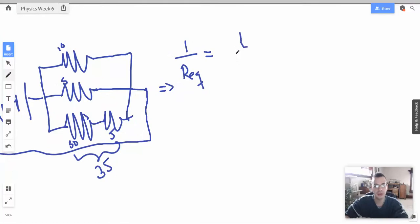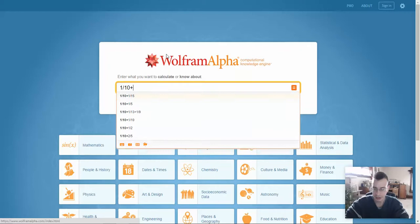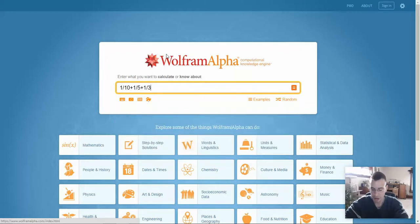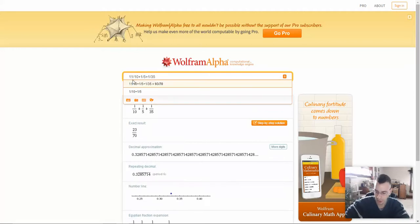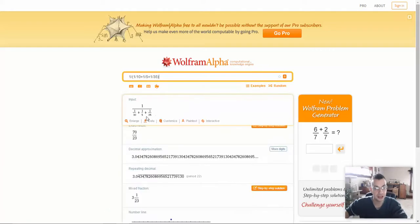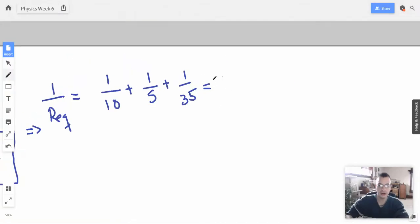So one over R equivalent will be one over 10, plus one over five, plus one over 35. All right, and I'm just going to go straight to Wolfram and let Wolfram do this. If I was doing this on a test, I just go straight to my calculator. I don't usually like putting fractions like this in my calculator, one tenth, one fifth, plus one 35th. But then I do one divided by quantity to take the reciprocal of it. So it should look like that, perfect. And I get 70 over 23. That seems reasonable. And then I'm going to say that implies that R equivalent equals 70 over 23.